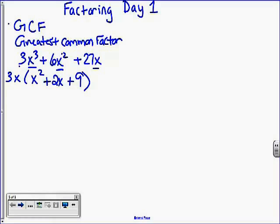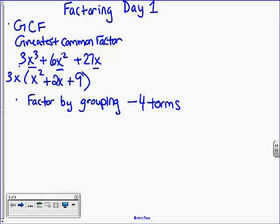Next way we can talk about factoring is factor by grouping. In factor by grouping, you have four terms. Always. If it's not four terms, you can't factor it by grouping.